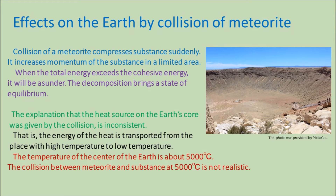The effects on the Earth by the collision of a meteorite are explained as follows: collision of a meteorite compresses the substance suddenly, increasing momentum of the substance in a limited area. When the total energy exceeds the cohesive energy, it will be asunder. The decomposition brings a state of equilibrium. The explanation that the heat source of the Earth's core was given by collision is inconsistent, because the energy of heat is transported from places with high temperature, and the temperature of the center of the Earth is about 5,000 degrees Celsius — a collision between a meteorite and substance at 5,000 degrees Celsius is not realistic.